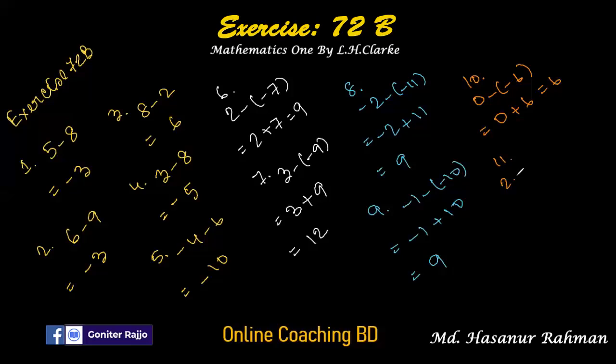Number 11: 2.1 minus 2.1. If we subtract 2.1 from 2.1, we get 0, and that will be the answer.